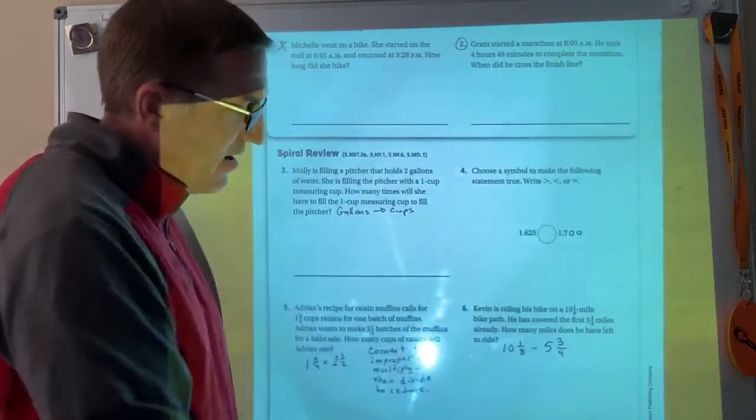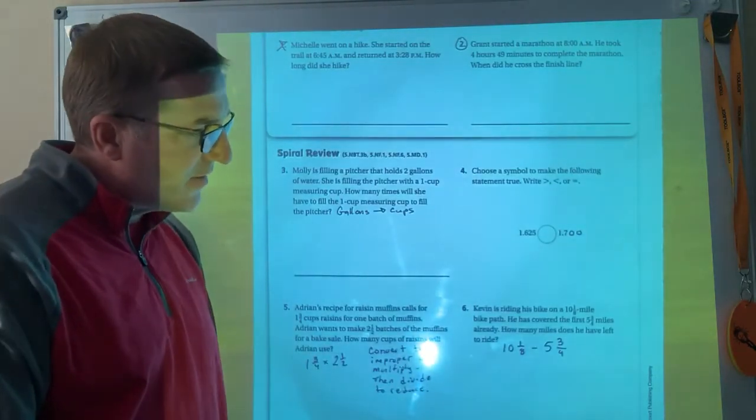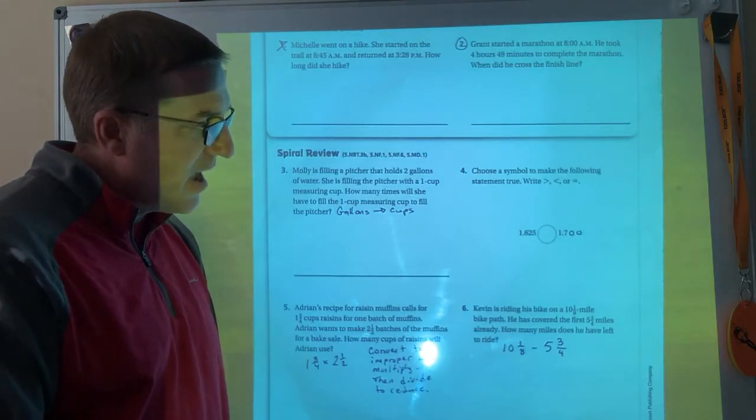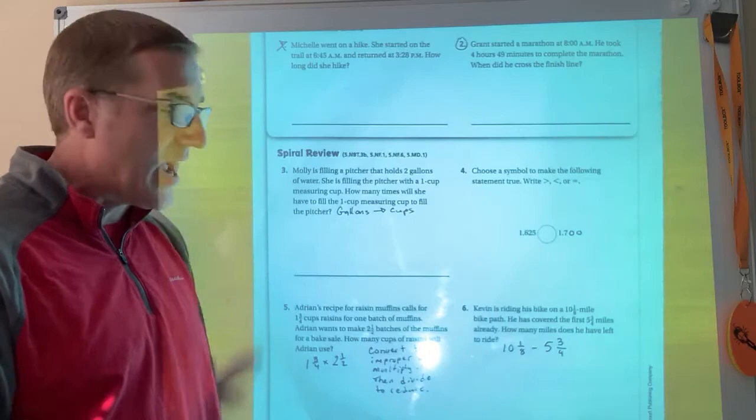And then over here, Kevin's riding his bike on a 10 1⁄8 mile bike path. He has covered the first 5 3⁄4 miles. How many miles does he have left? That's the difference between the whole thing and what he's done, so it's a subtraction problem.